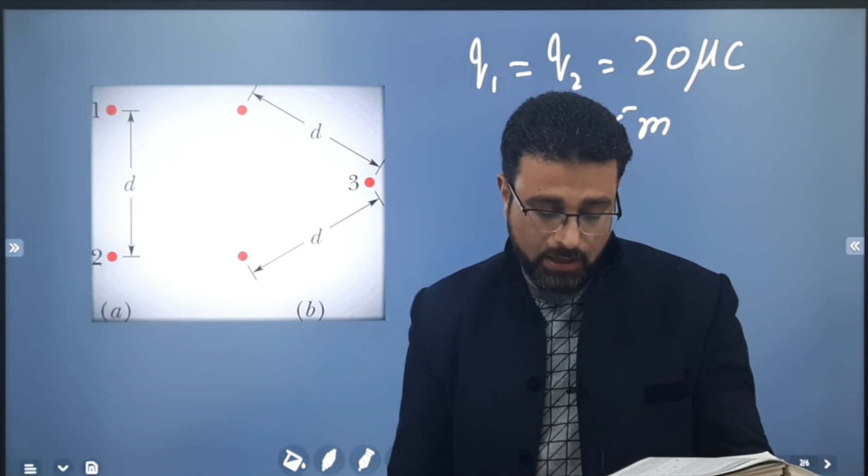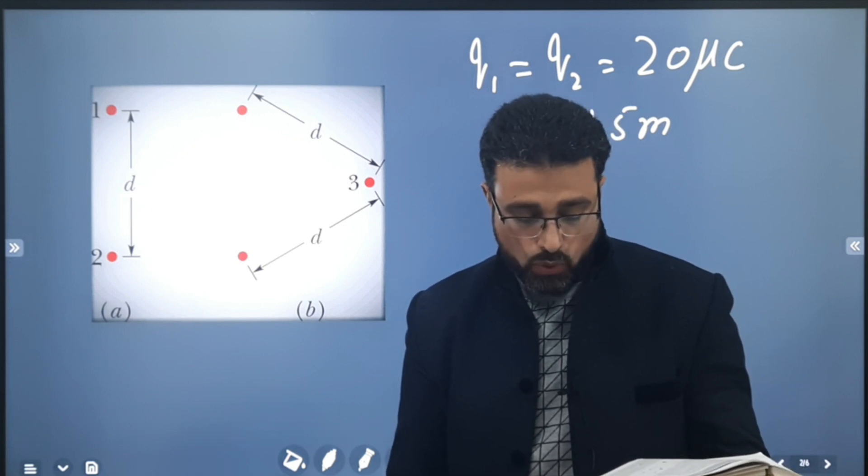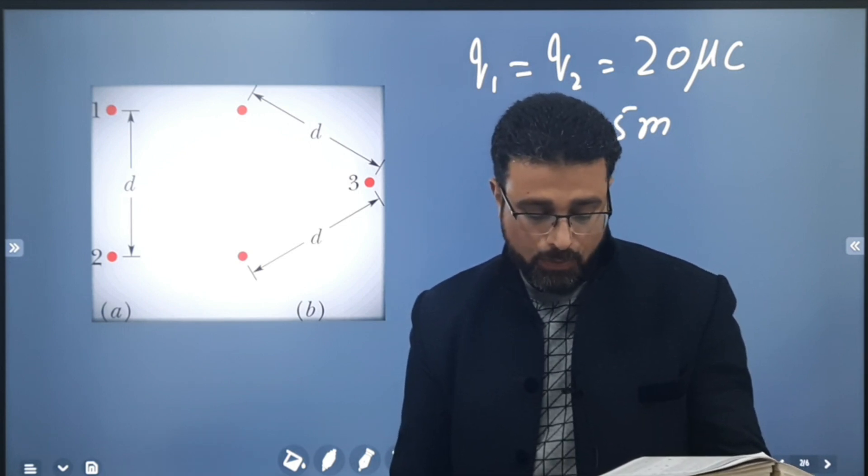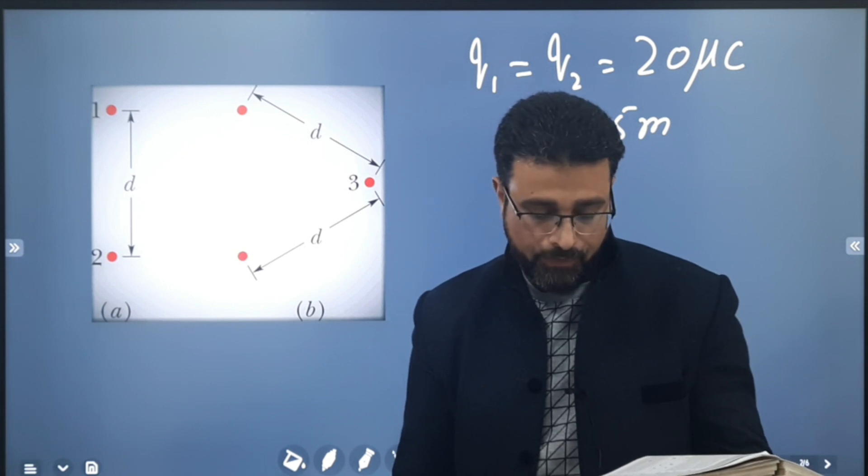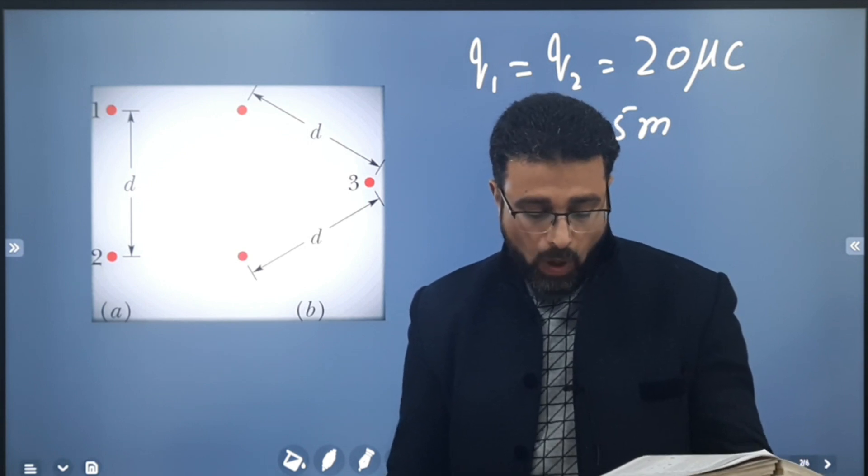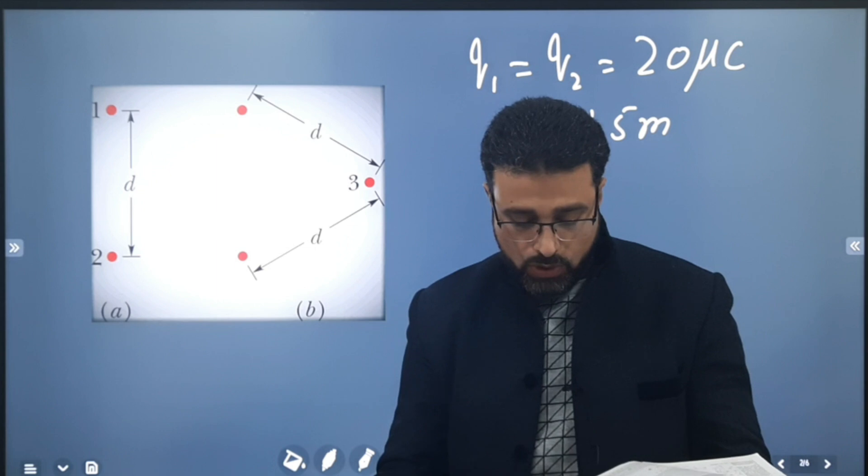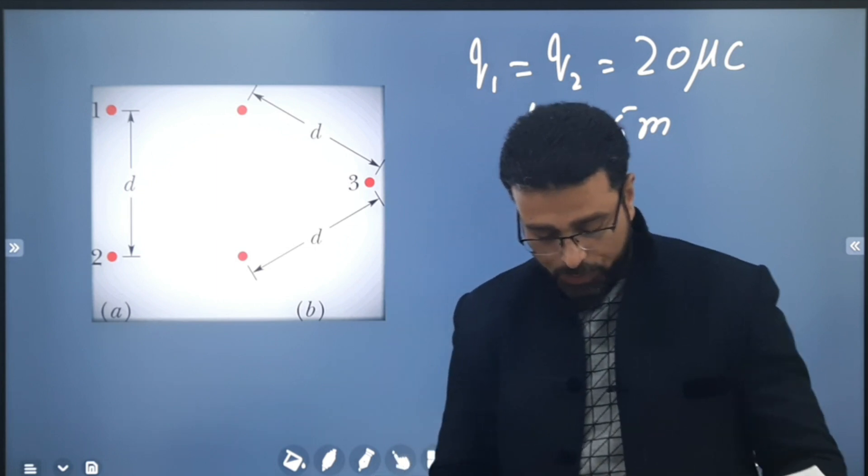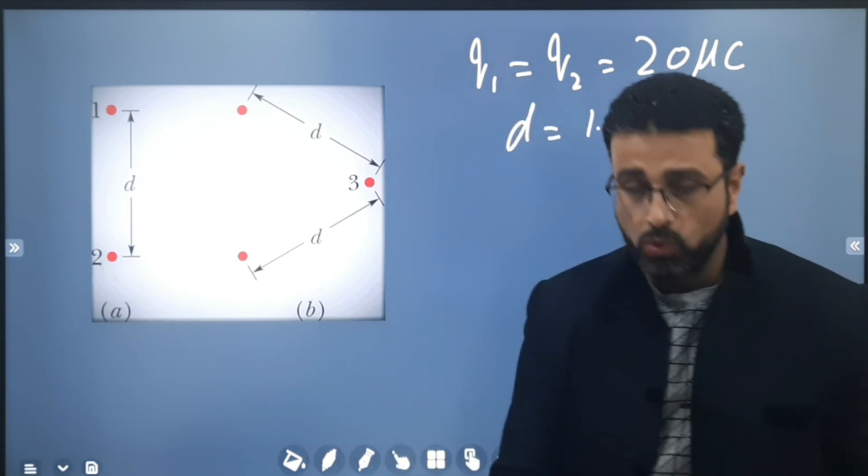In Figure B, particle 3 of charge 20 microcoulombs is positioned so as to complete an equilateral triangle. Part B: Now what is the magnitude of the net electrostatic force on particle 1 due to particles 2 and 3?